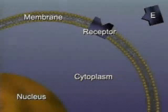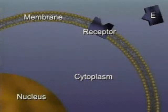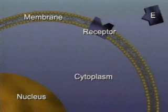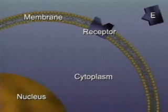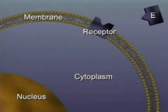Peptide hormones influence their target cells without actually entering them. They bind to receptors on the target cell's plasma membrane. This will trigger one of a variety of responses.